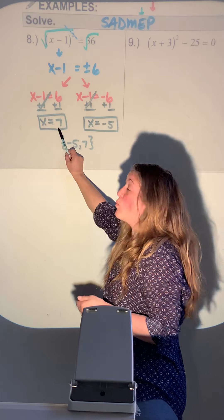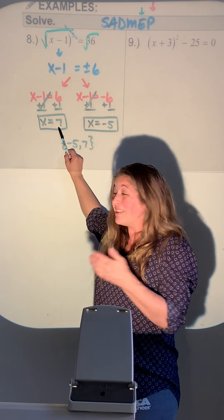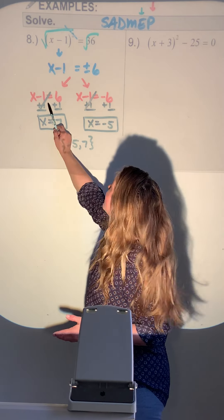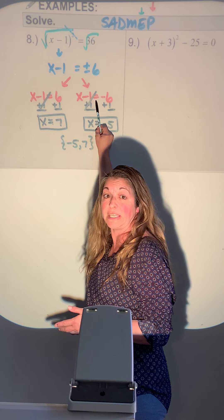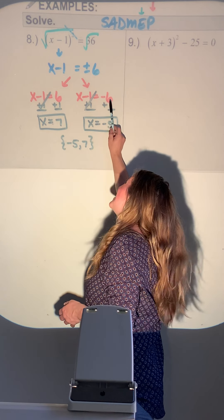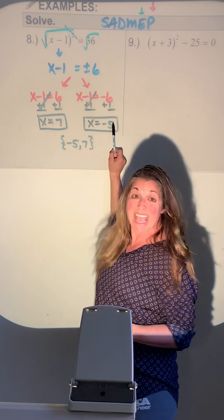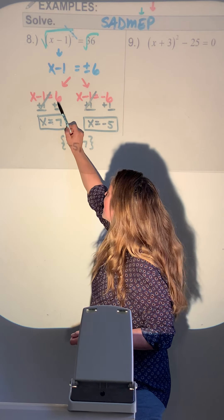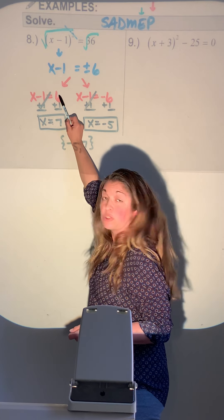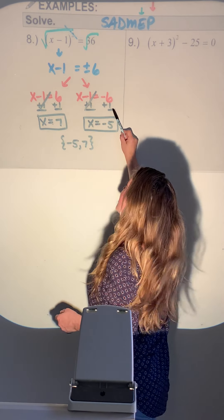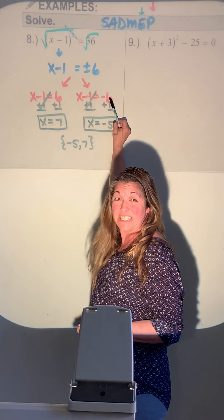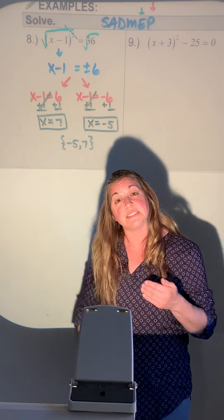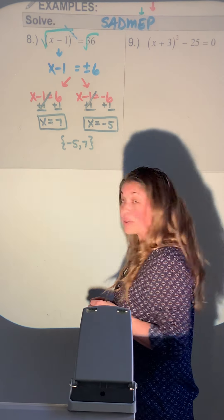Once you take care of that 1, your answers aren't plus or minus 7 either, because adding 1 to a positive 6 and adding 1 to a negative 6 give you two completely different answers. That's why these get a little trickier.